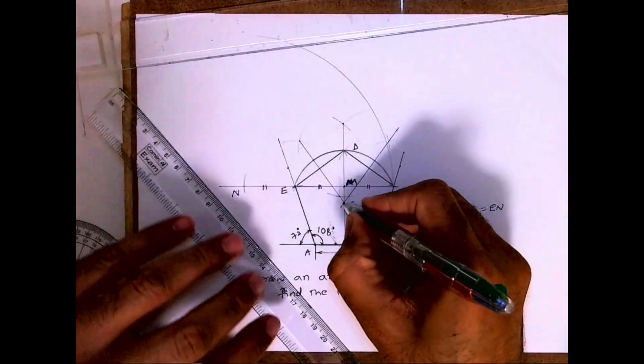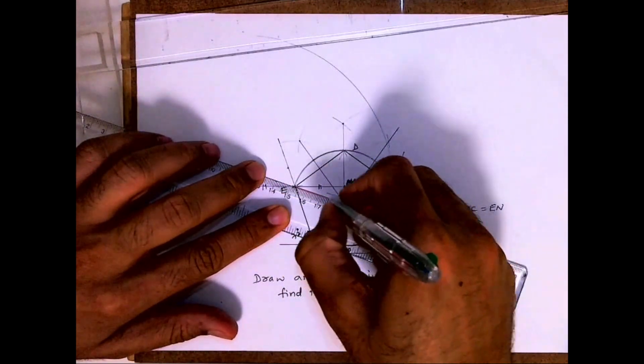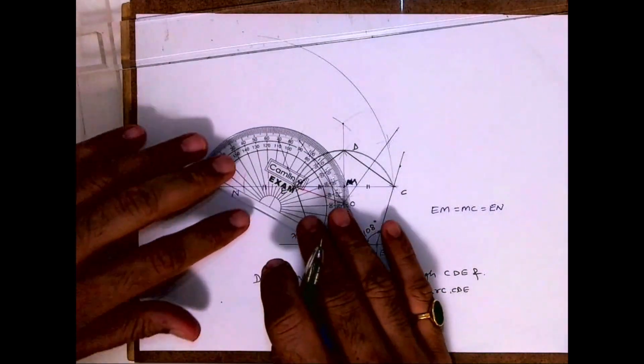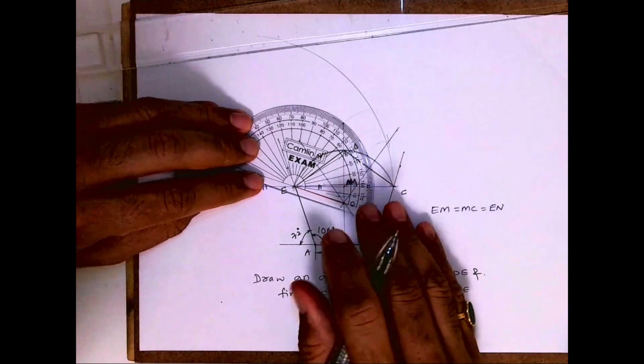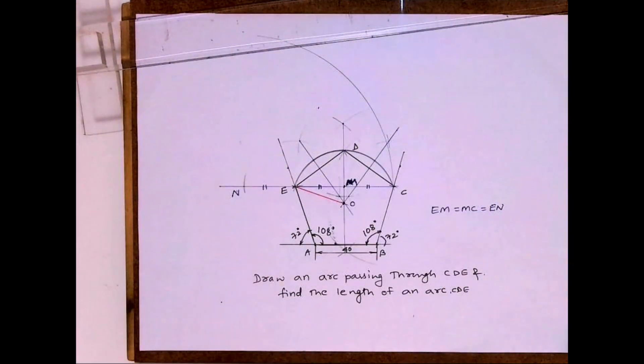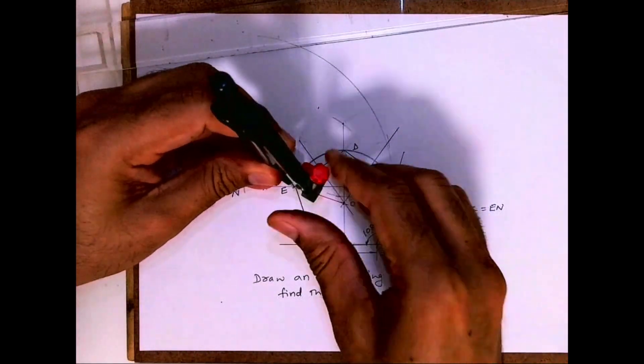After that you join O to E. And if you want to do it in a hurry, then you can take directly a protractor and you can mark 90 degrees like this. And then if you join, you'll get the arc length, or if you want to do it by construction, then you construct 90 degrees.